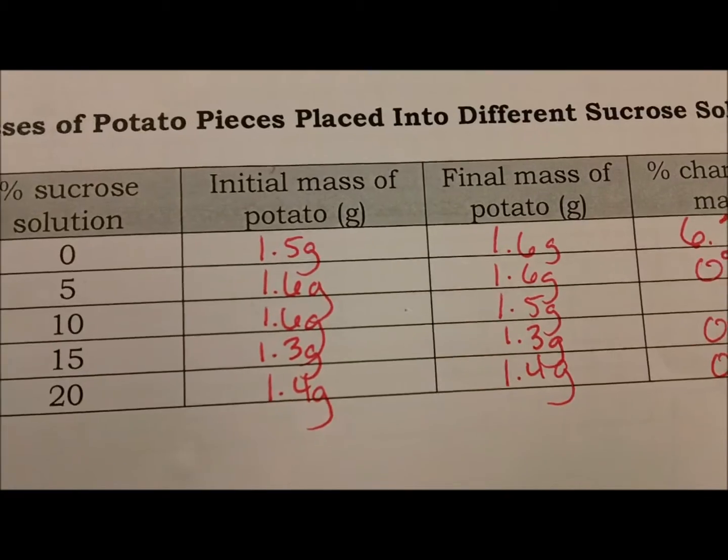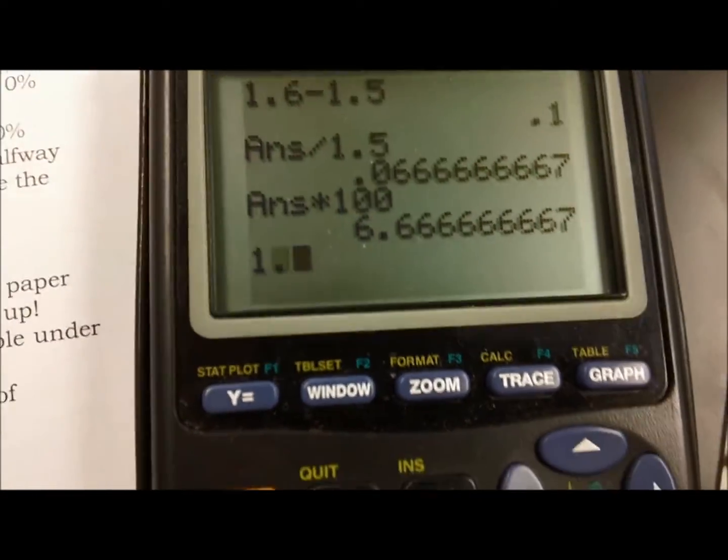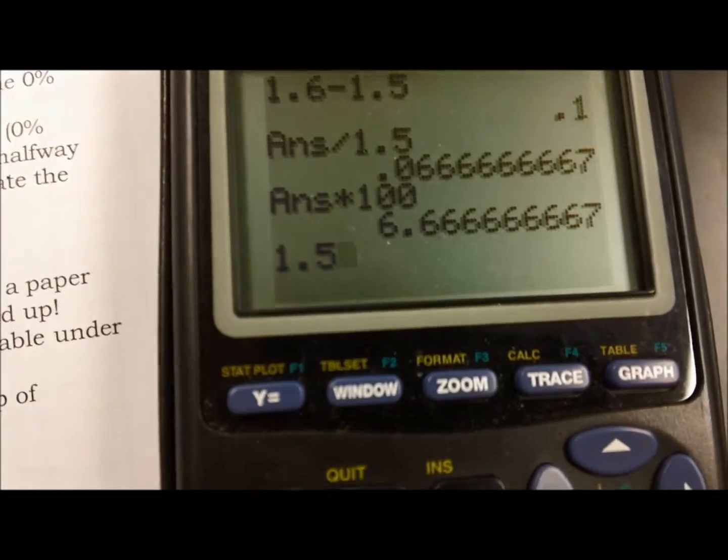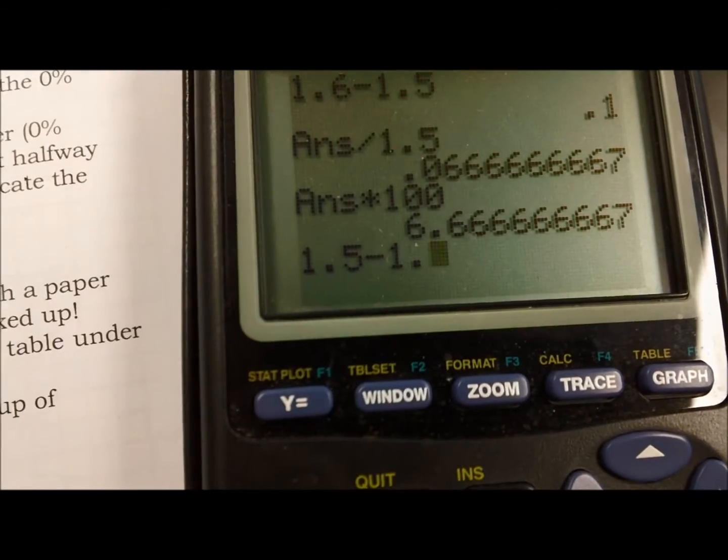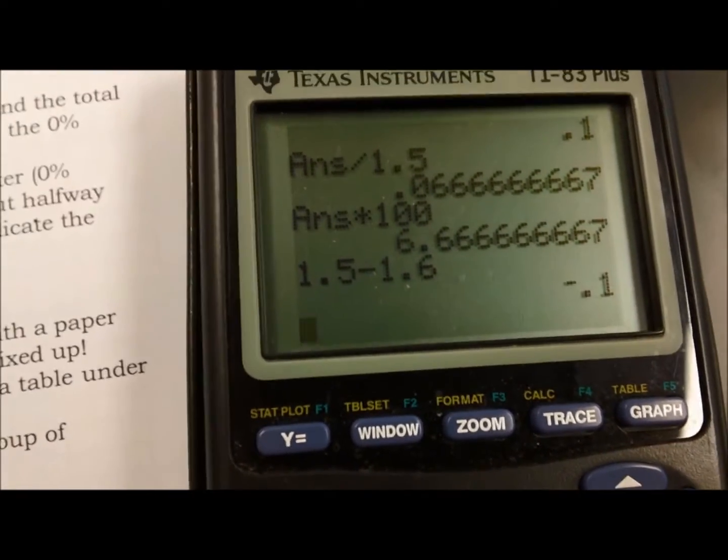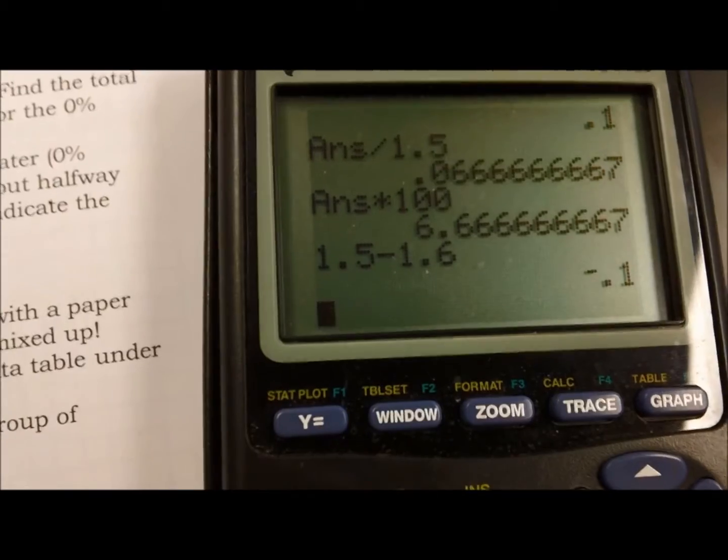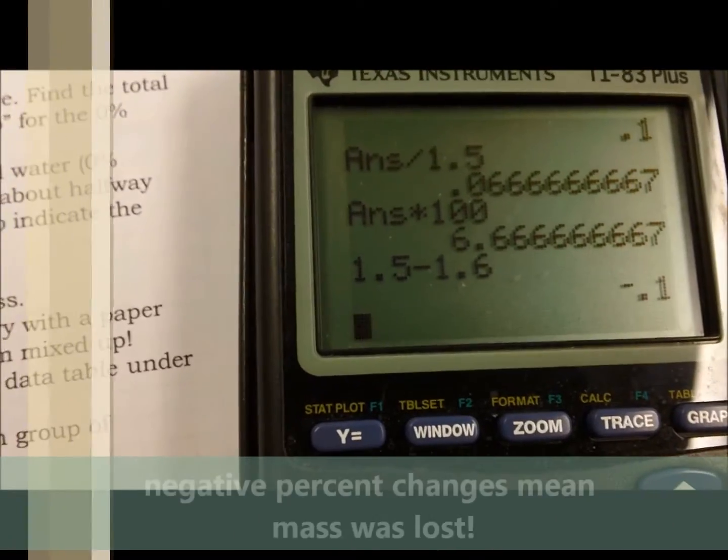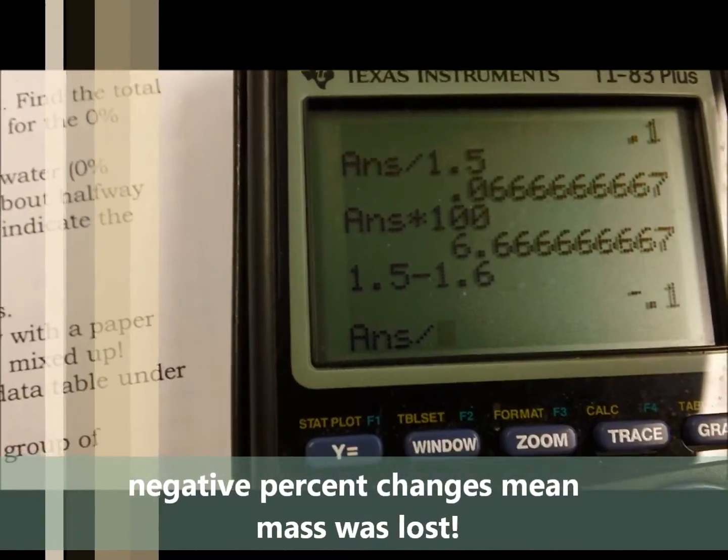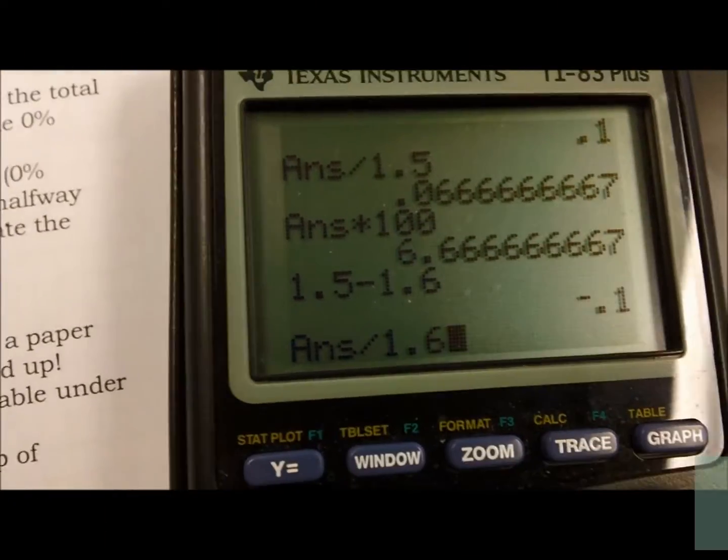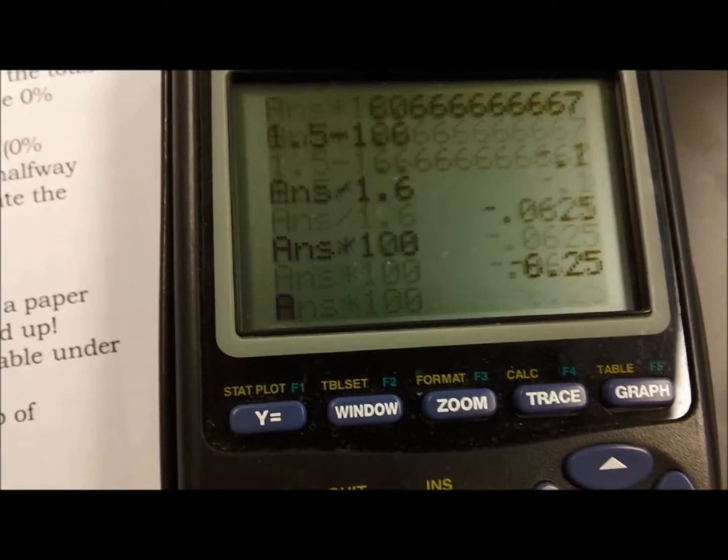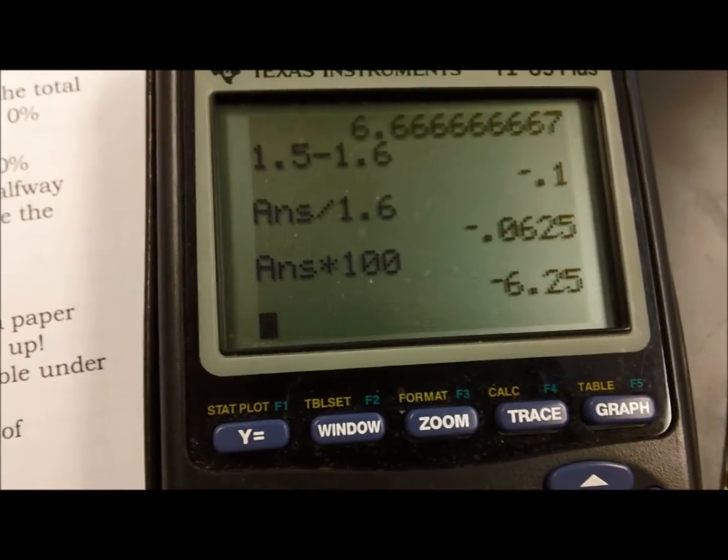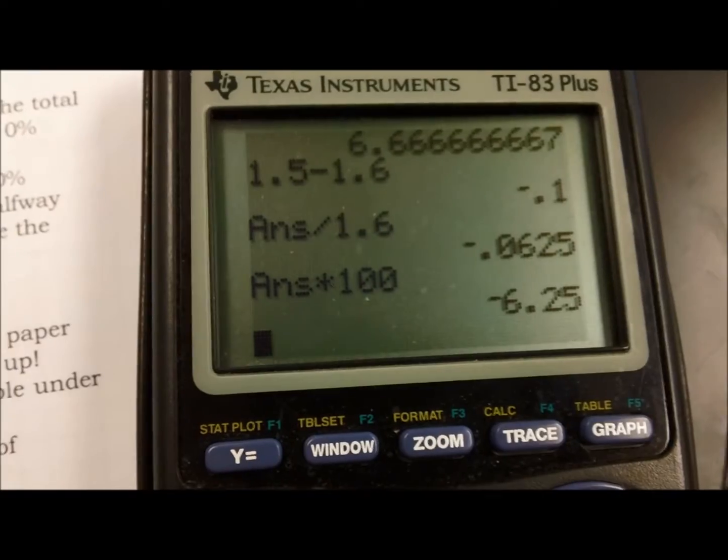For our 10% solution, we start off with 1.6 but it dropped to 1.5. So our final 1.5 minus the starting mass, which is 1.6, gives us a negative number. This means that it lost mass. When we divide that by our starting mass, 1.6, and then multiply by 100, we have a decrease of 6.3%.